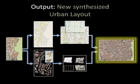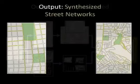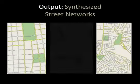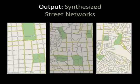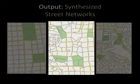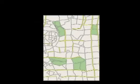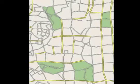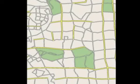To demonstrate our system, we show a blend of the style of two example fragments. A regular pattern city has been blended with an irregular pattern city. The resulting street network combines characteristics from both styles.